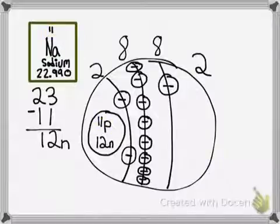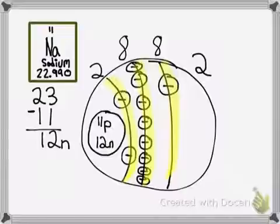Next, put the electrons on energy levels. There are also 11 electrons. You always have the same amount of electrons as protons.